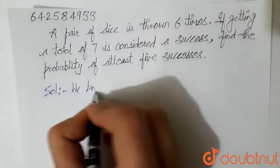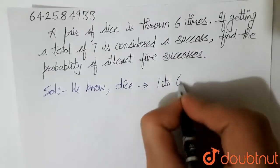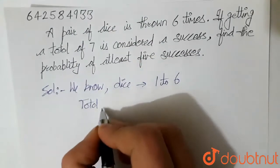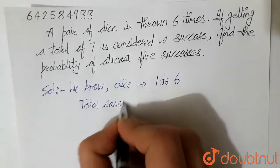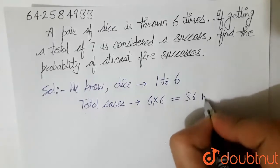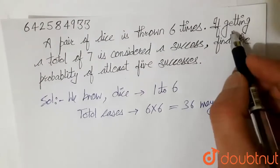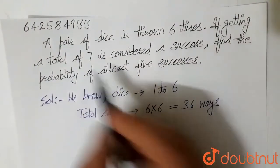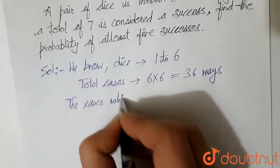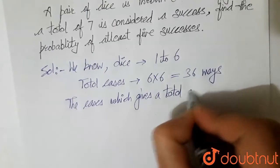We know that a dice have numbers from 1 to 6. So a pair of dice is thrown. So total cases would be, total possible cases are 6 into 6 that is 36 ways. Out of these 36 ways, we have to get a total of 7. We have to get the cases which gives a total of 7.